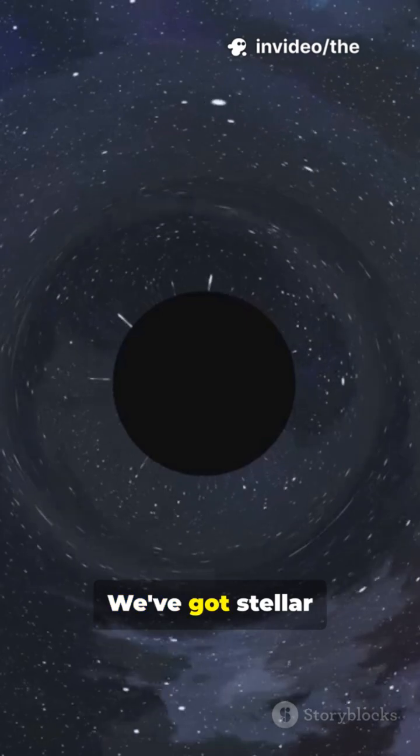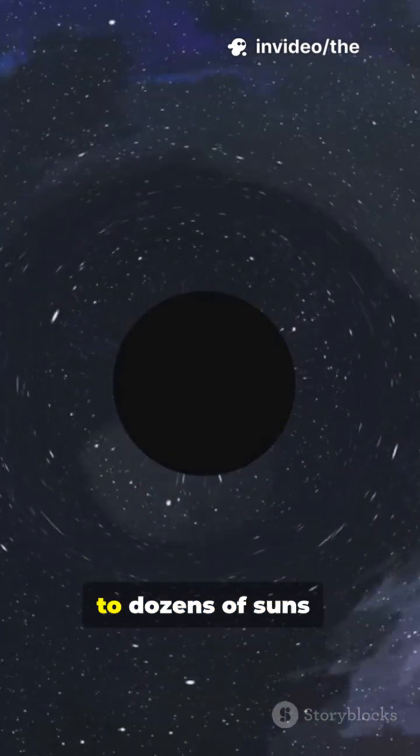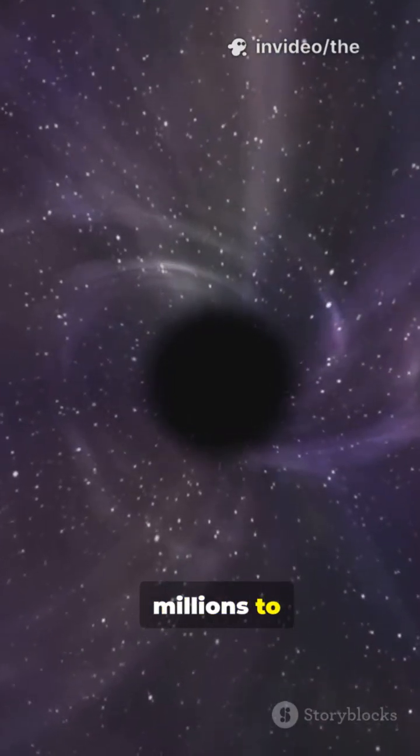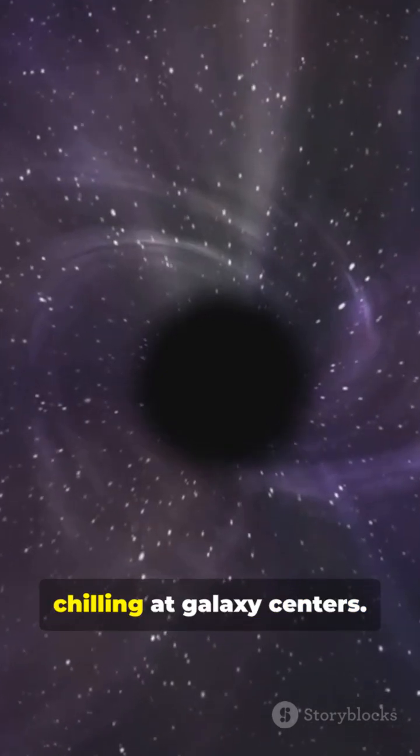Types. We've got stellar black holes, a few to dozens of suns. Supermassive giants, millions to billions of suns, chilling at galaxy centers.